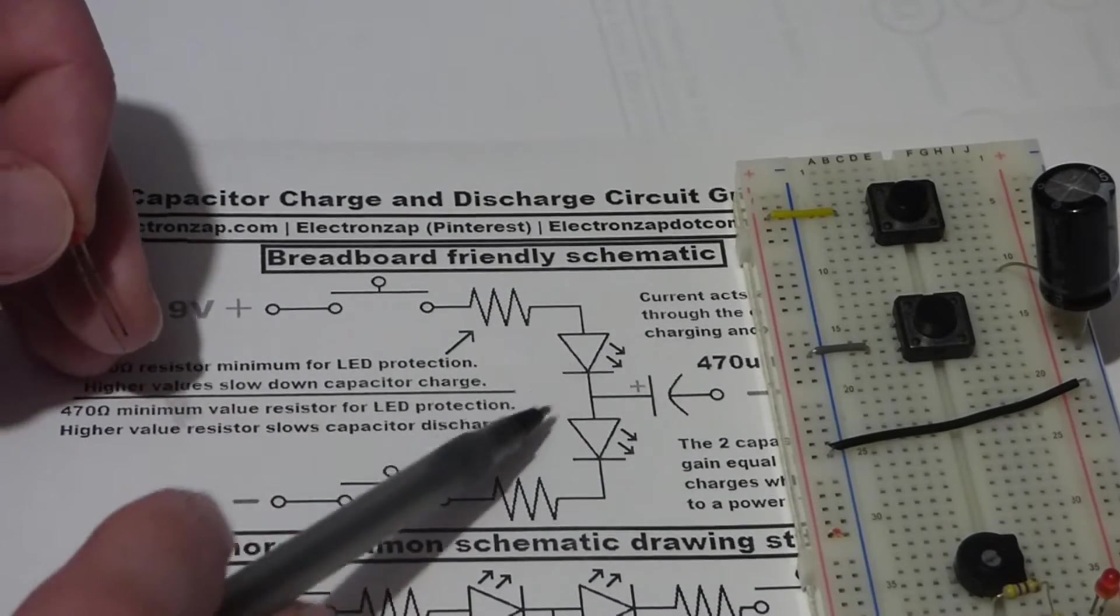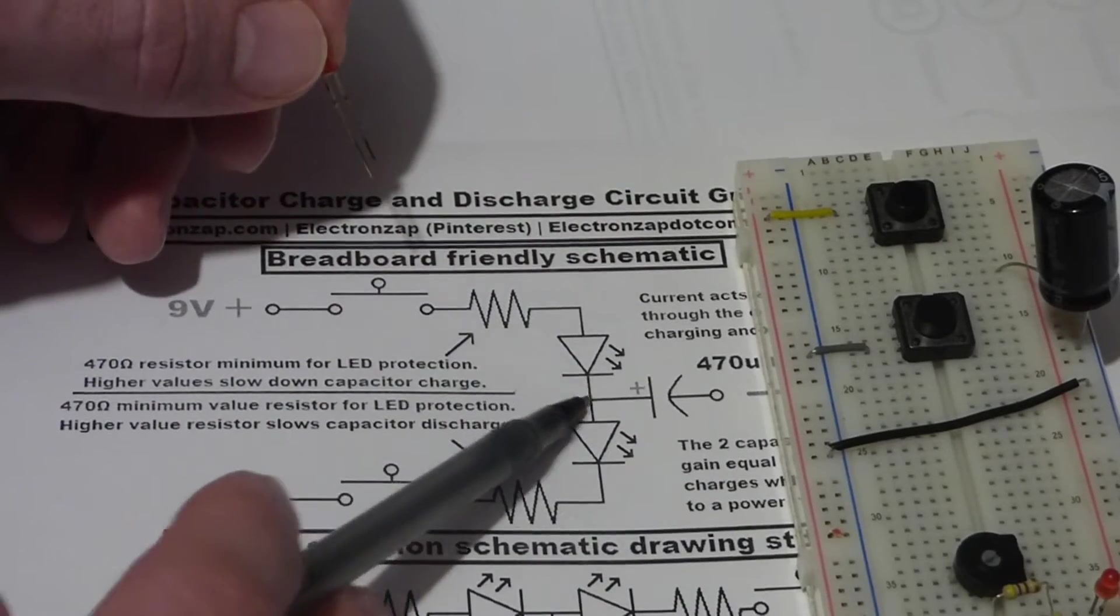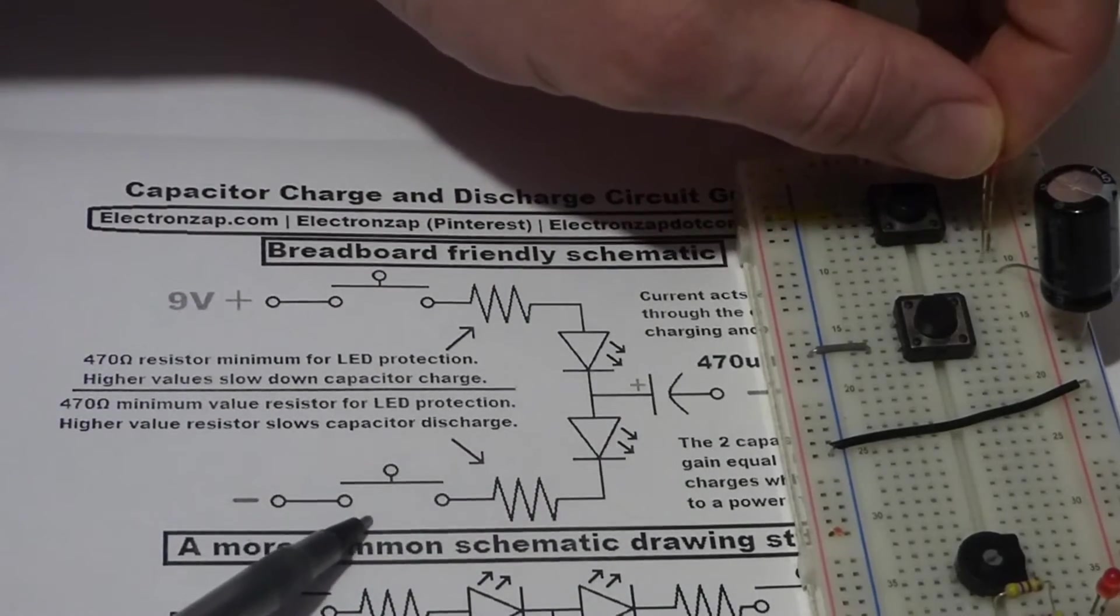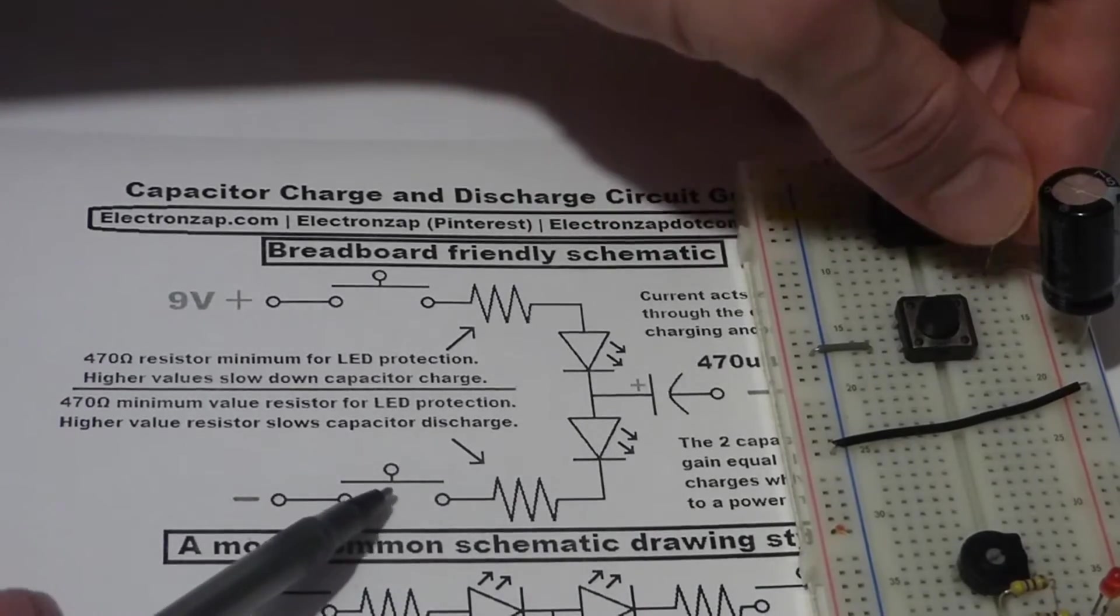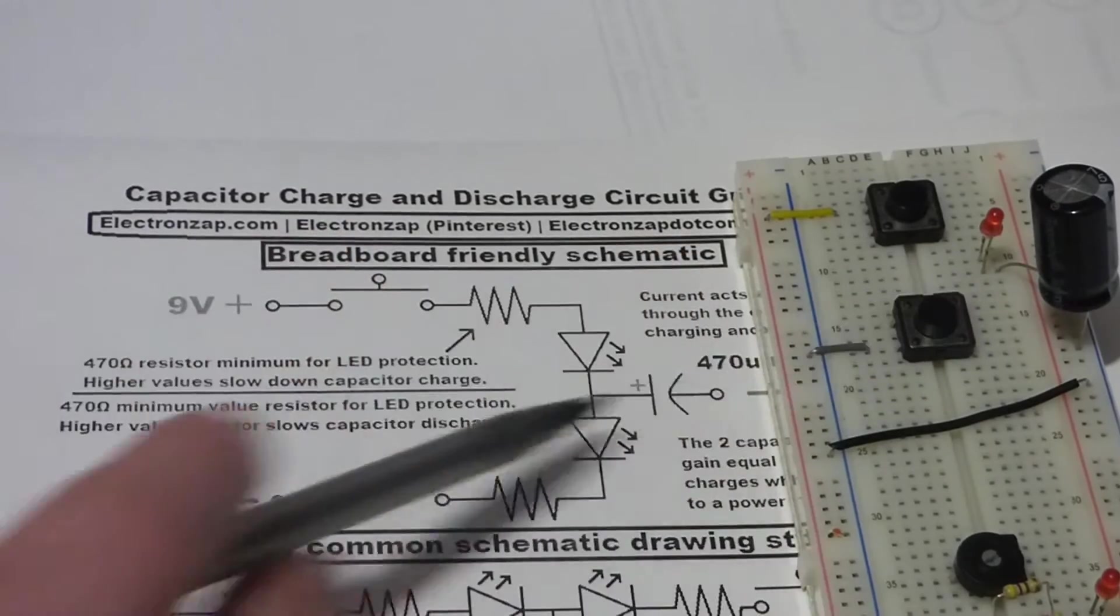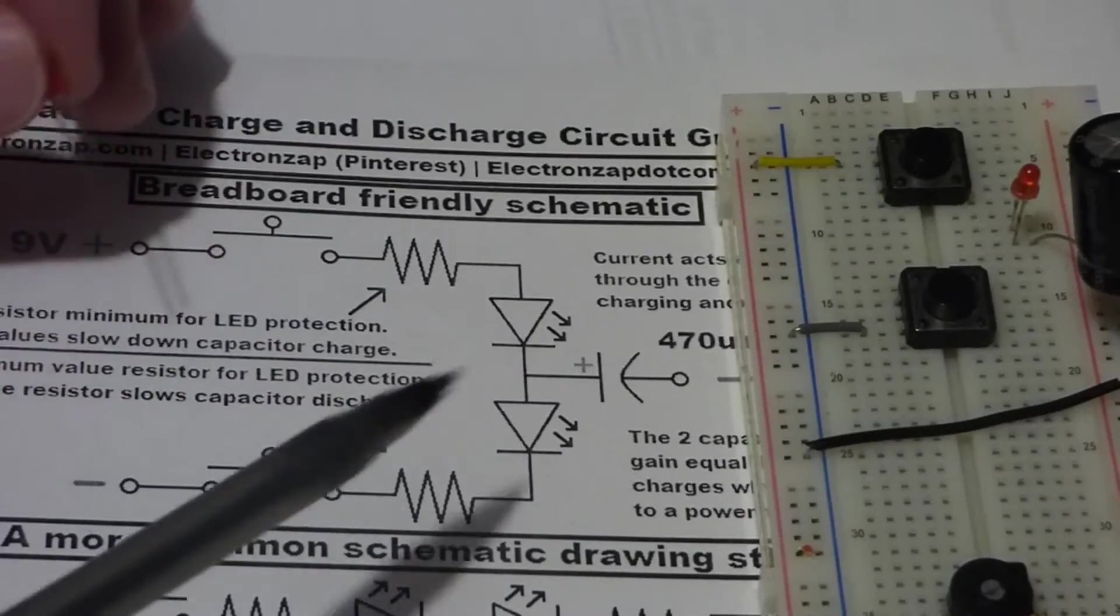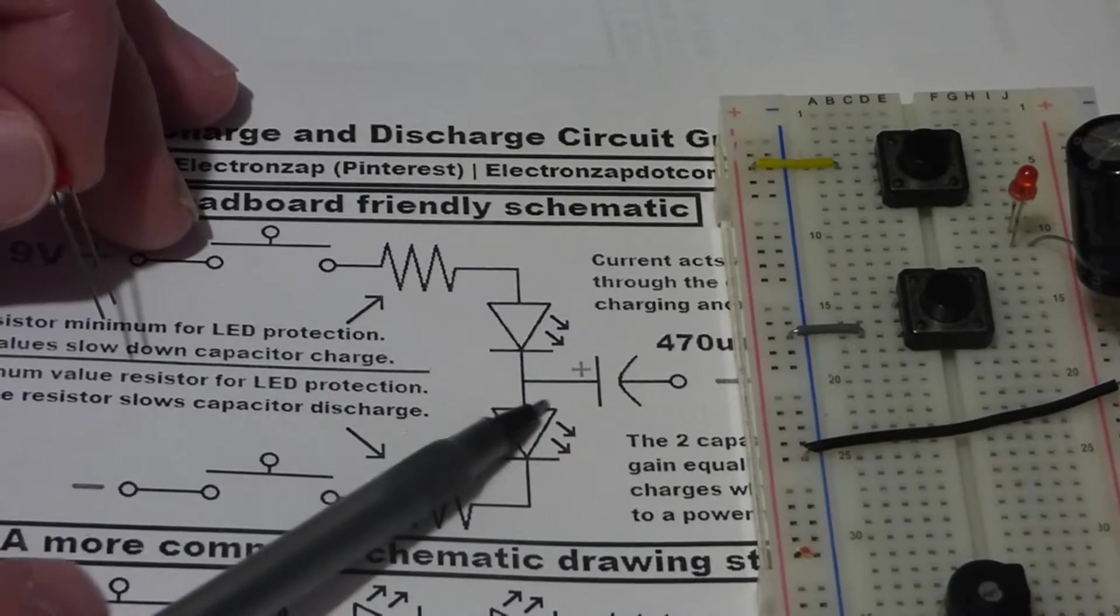So the long lead, as I said, goes towards the positive side. So I'll connect the short lead to the row that the long lead, the positive side of the capacitor, is connected to right there. Short lead's connected there.